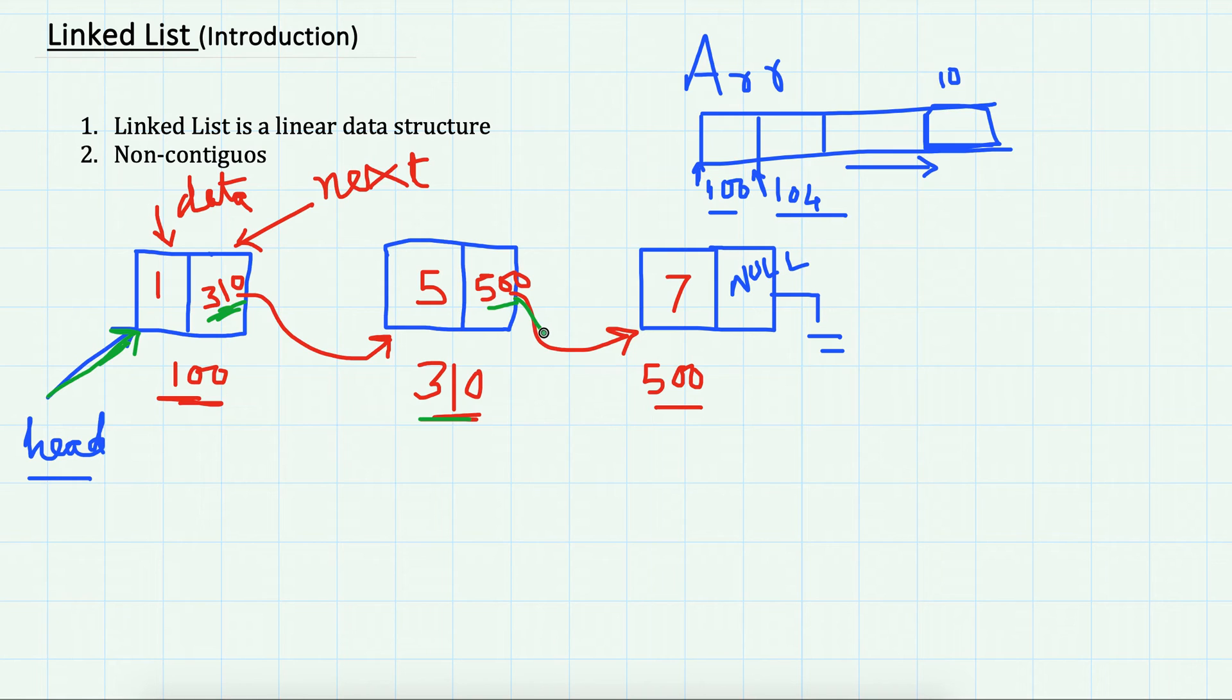is stored here, so we will go to address 500. Now we have reached the third element, which stores the value 7. This was the basic idea behind linked list. Compared to arrays, these are non-contiguous, and this is the main difference. It has to be iterated one